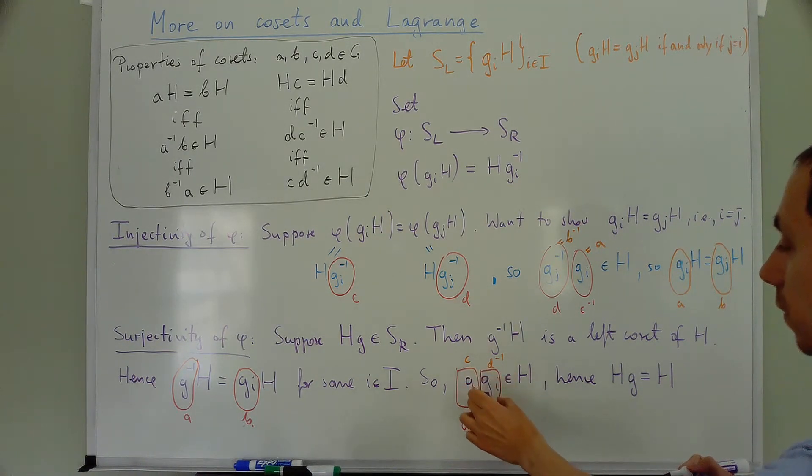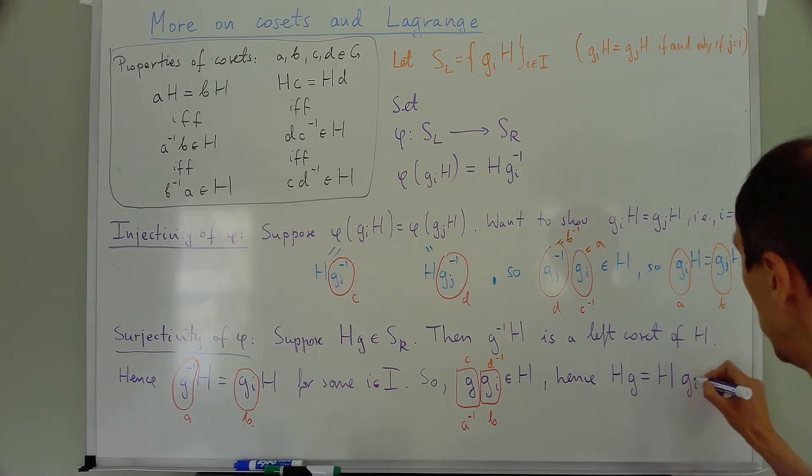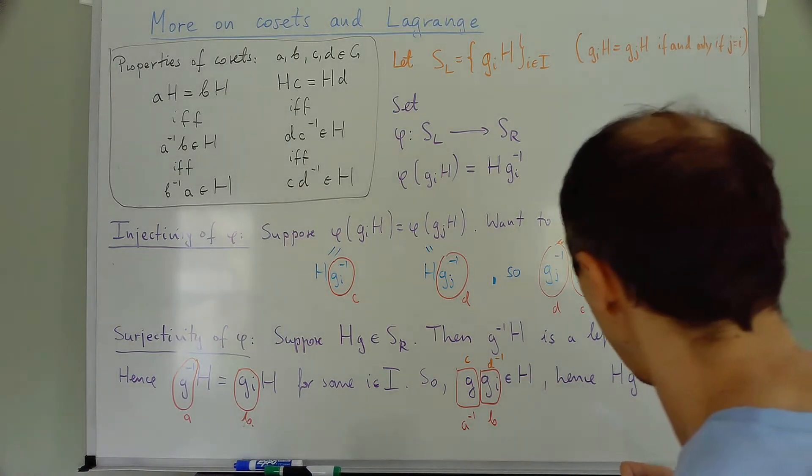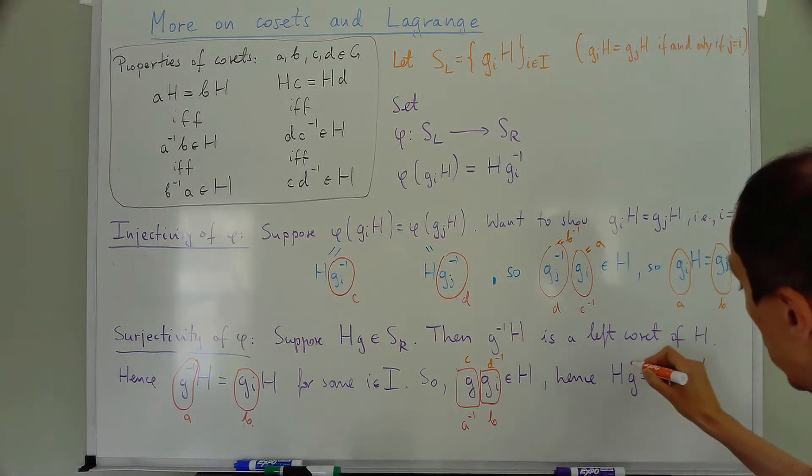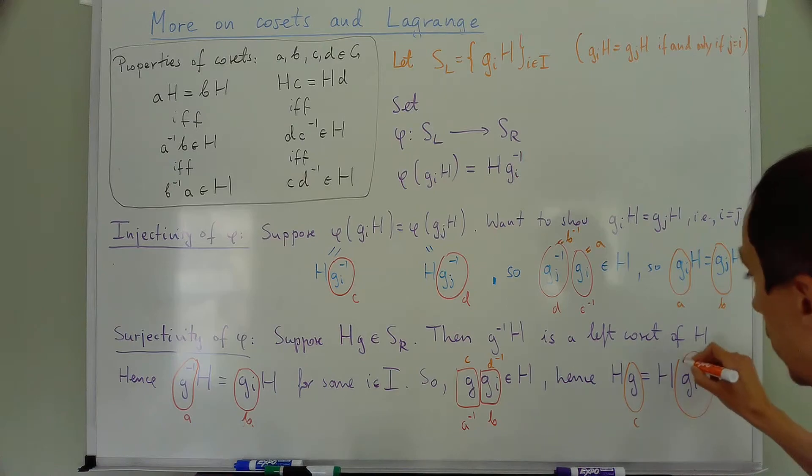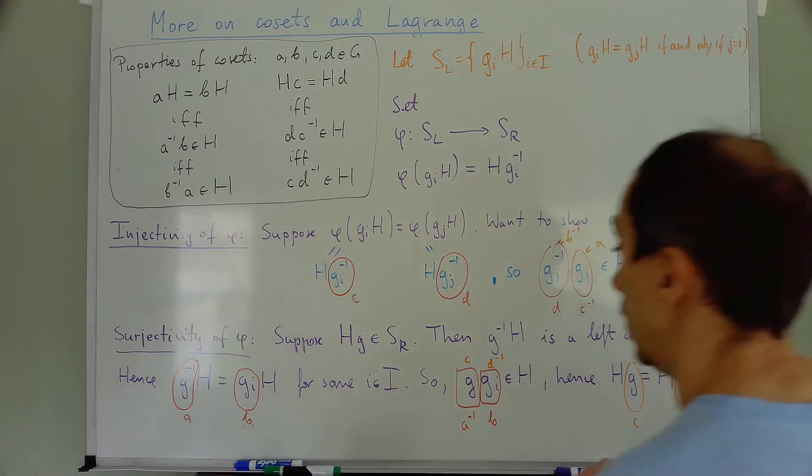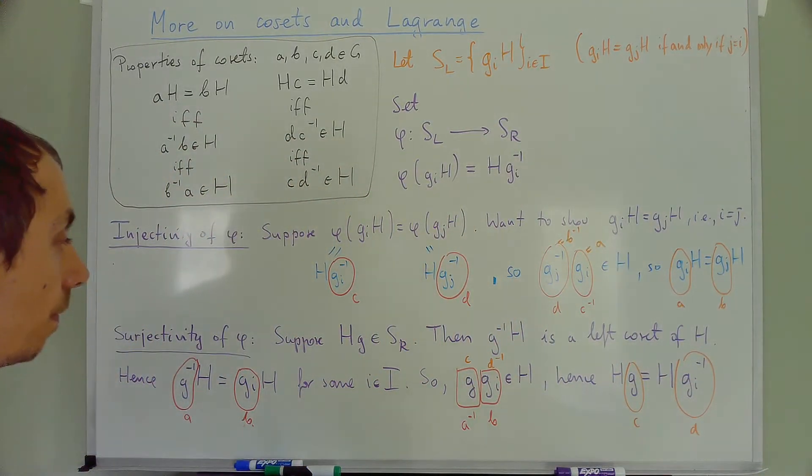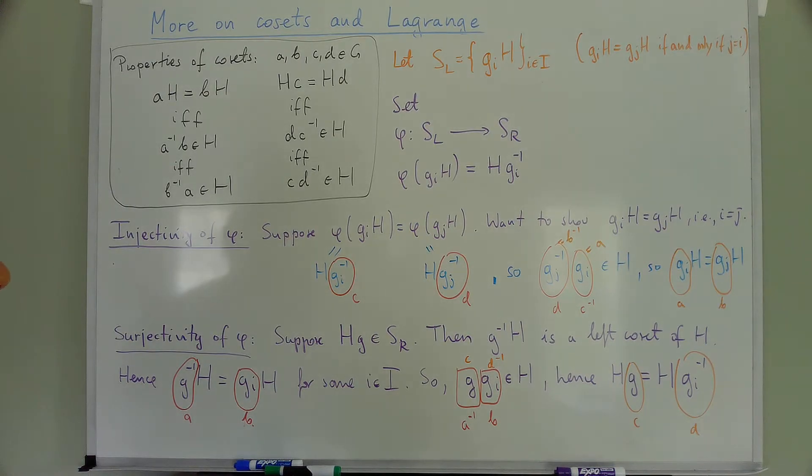So D inverse is Gi. So D is going to be Gi inverse. So D inverse is Gi. This is again C and this now is D.